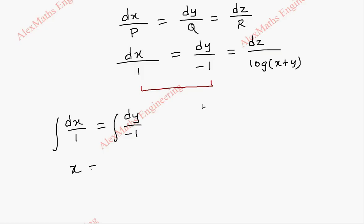This is x. This is minus y and we have a constant c1. So x plus y equal to c1.